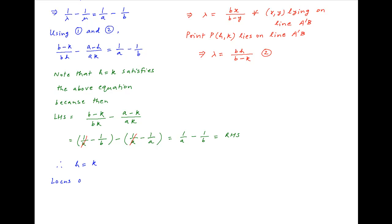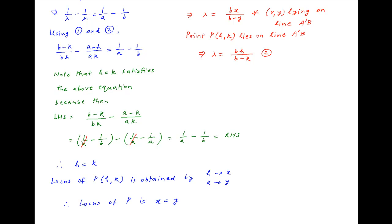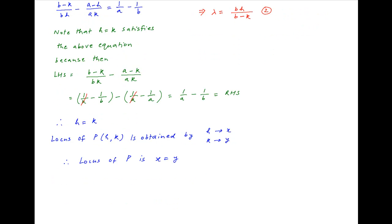Therefore, the locus of the point P with coordinates H,K is obtained by replacing H with x and K with y in the above equation. Therefore, the locus of P is the straight line x equals y, which is the required answer.